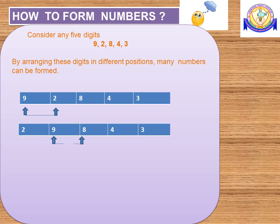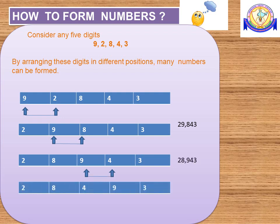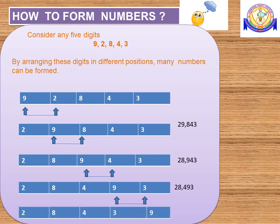If I interchange 9 and 8, then I will get a new number 28,943. If I interchange 9 and 4, then I will get a new number 28,493. If I interchange 9 and 3, then I will get a new number 28,439. So I got 5 different numbers from the digits 9, 2, 8, 4, 3. This is one way of forming the numbers.